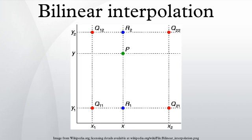The result of bilinear interpolation is independent of which axis is interpolated first and which second. If we had first performed the linear interpolation in the y-direction and then in the x-direction, the resulting approximation would be the same. The obvious extension of bilinear interpolation to three dimensions is called trilinear interpolation.